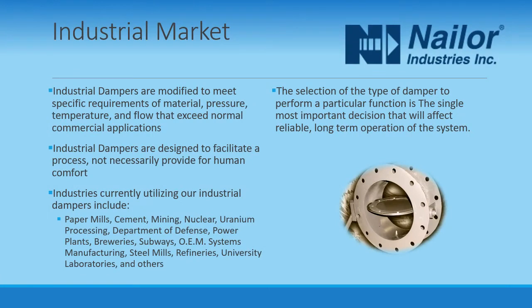The industrial damper market may perhaps be best understood through its differences to the commercial market. Whereas the commercial market is typically used for HVAC applications concerned with human comfort, the industrial market is more concerned with process control applications. Sometimes these overlap, with an industrial damper installed to allow man-safe operation or to control air quality or pollution, but generally the purpose of an industrial damper is to optimize the performance of the system or process itself by providing a greater degree of control or regulation.